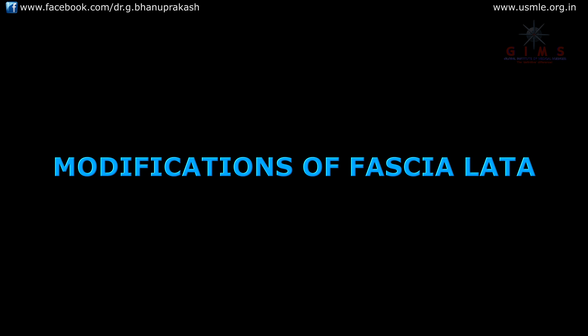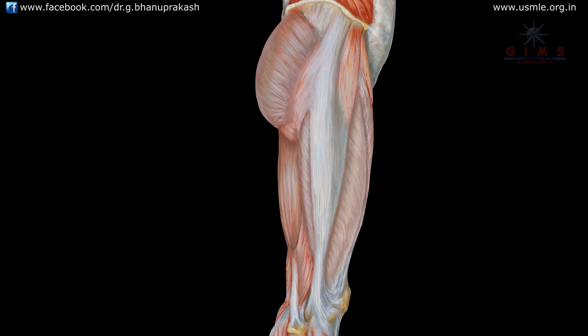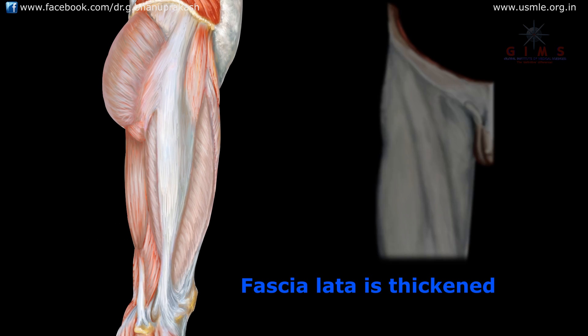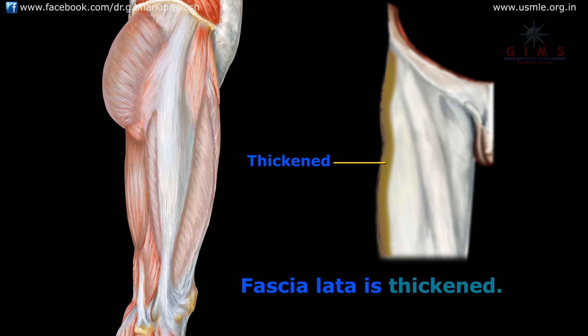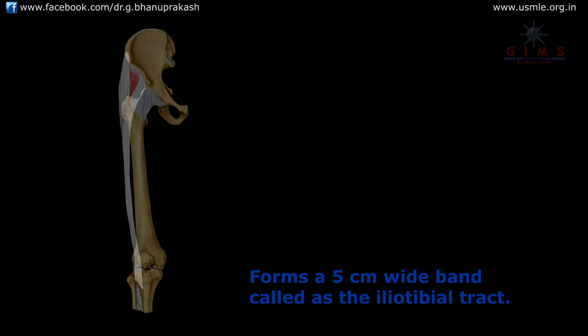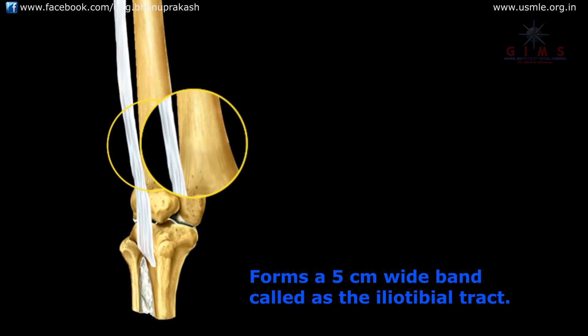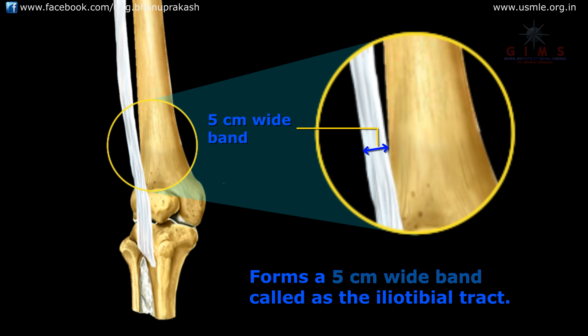Now we are going to discuss a modification of the fascia lata called the iliotibial tract. At the lateral part of the fascia lata, the fascia is thickened, and this thickened part of the fascia lata laterally forms a five-centimeter wide band called the iliotibial tract.